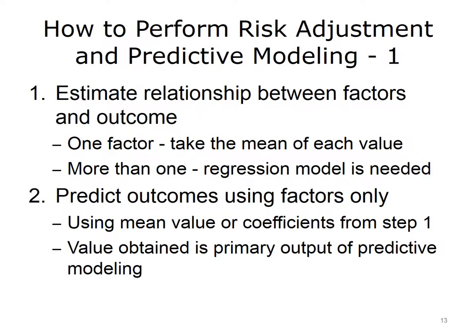The basic process of risk adjustment and predictive modeling can be summarized with four steps. Step 1: Estimate the relationship between the factors and the outcome. If there is only one factor, such as sex, with two values — male and female — the mean outcome level for each value will work. If there is more than one factor, a regression model is needed.